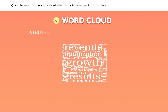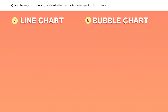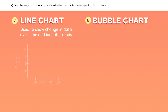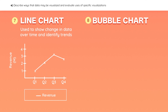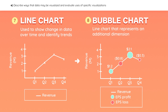A word cloud is used to visualize the frequency of unstructured, textual data. For example, if you take a transcript from a company report and create a word cloud, the largest words are the ones that appear most frequently in the report. A line chart is used to show the change in data over time and identify trends — for example, plotting the quarterly revenue for one or more firms. A bubble line chart is a unique type of line chart used to represent an additional dimension, such as showing both revenue and earnings per share at the same time.